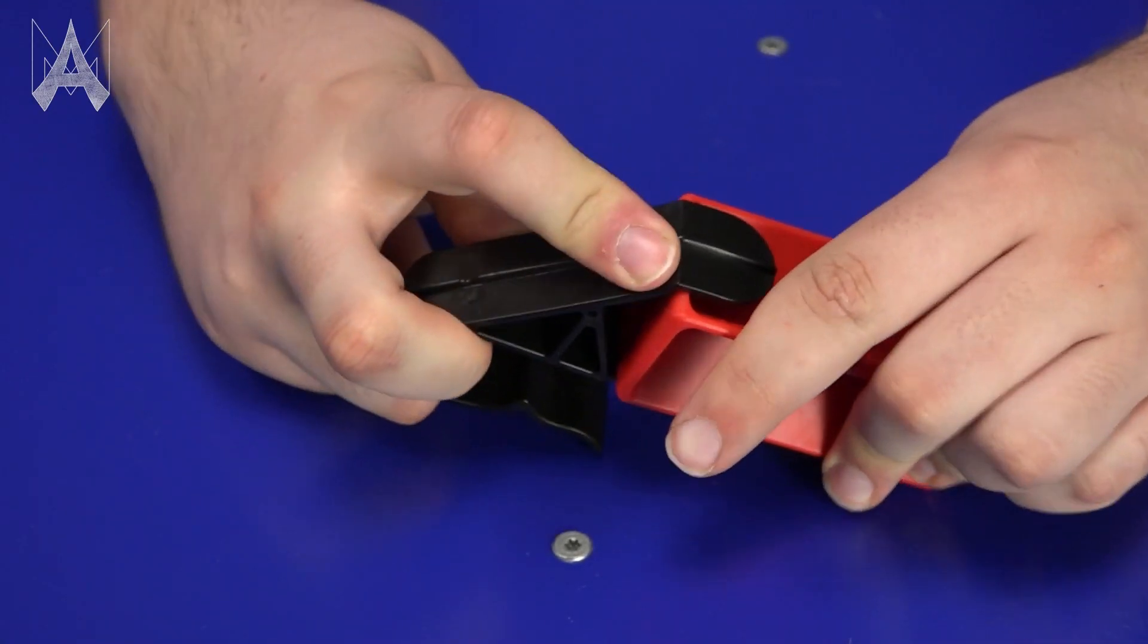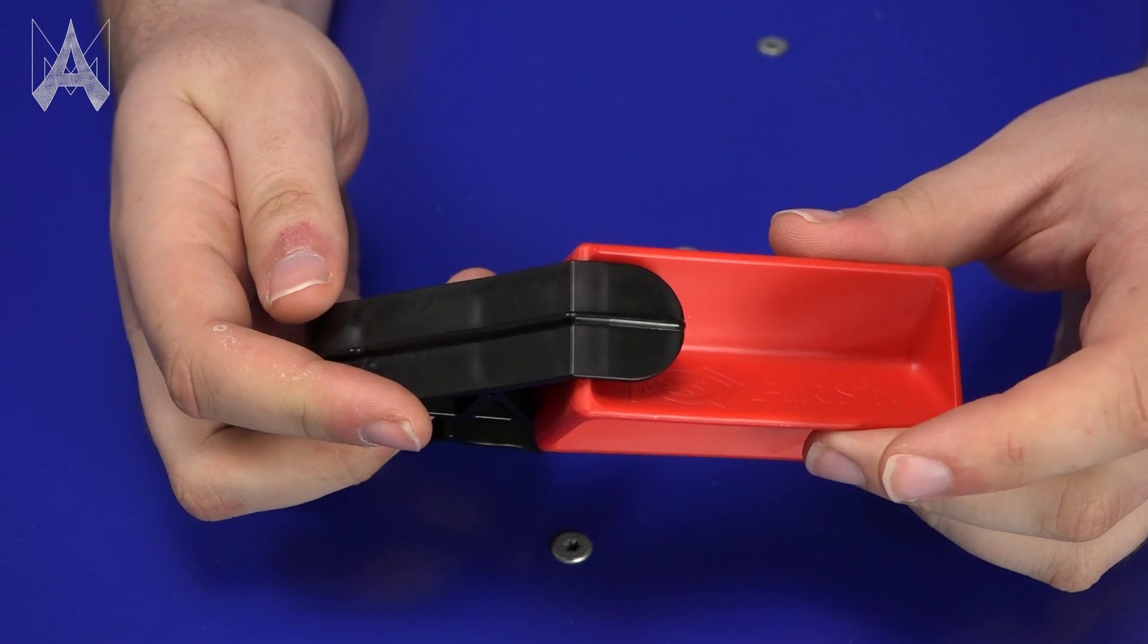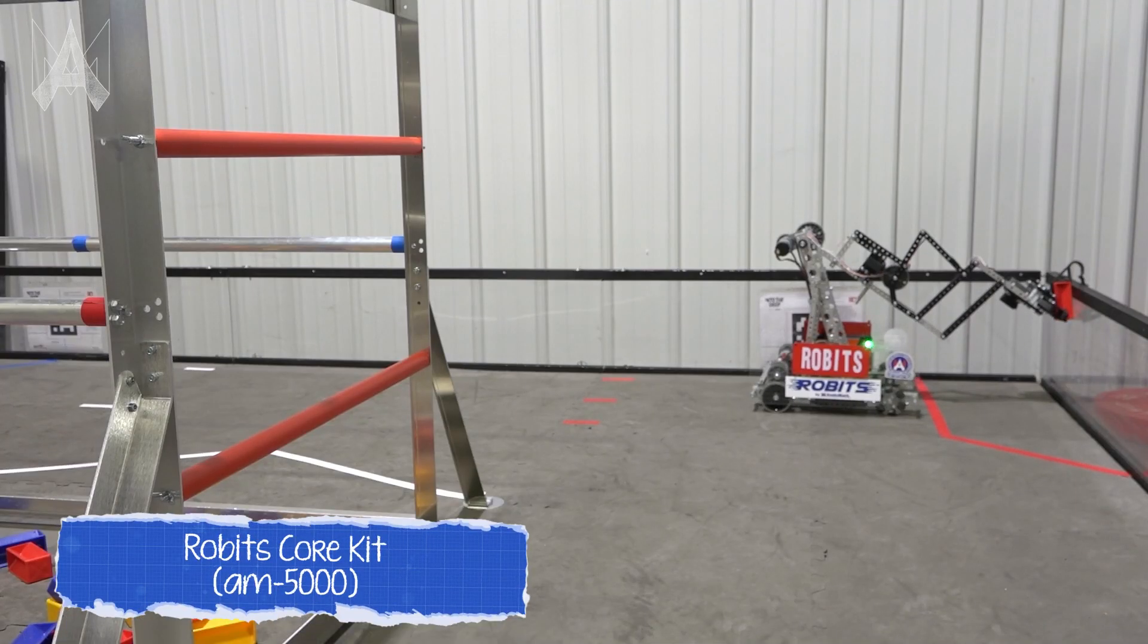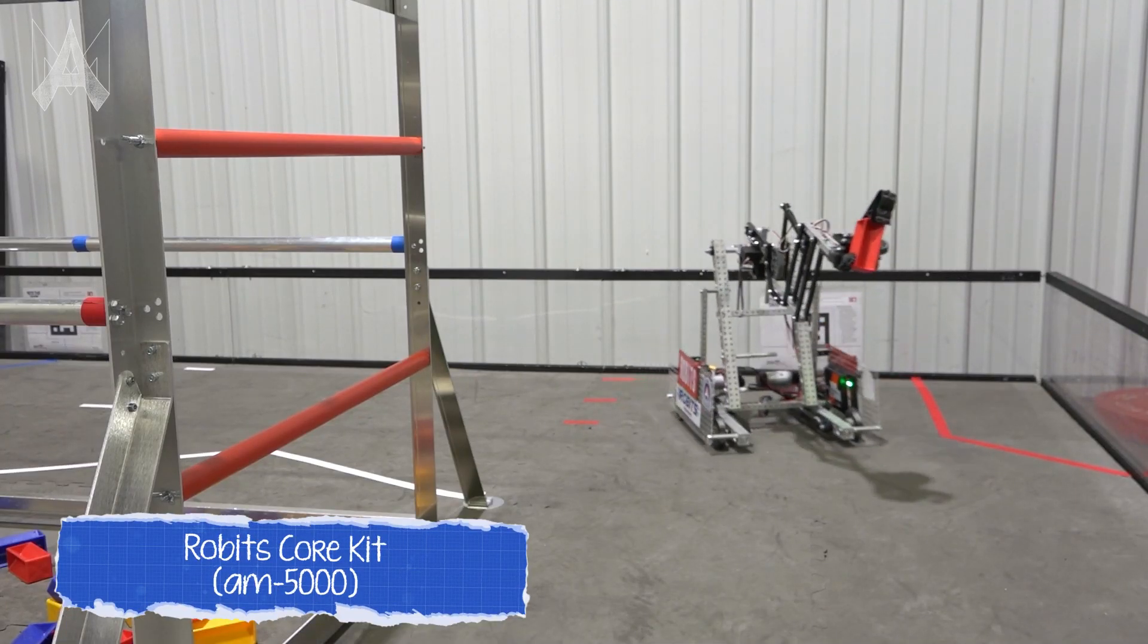Your alliance starts with 20 clips in the human player station. Once the sample is returned or with some of the starting samples that you get when you start the match, the human player can attach a clip to a sample to form a specimen, which they can then place on the field border or on the ground for your robot to collect.